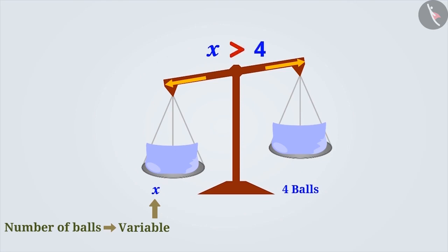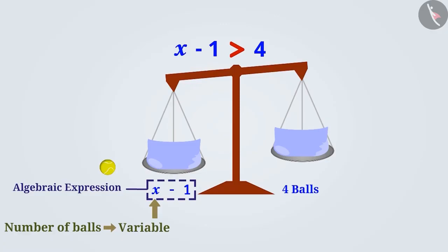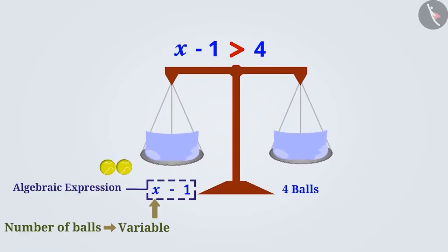What should we do if we have to balance both the scales? Obviously, we need to remove some balls out of the x balls. Here, if we take one ball out of the x balls, the number of balls in the left plate will be x-1. This expression with variables is called an algebraic expression, which we have studied earlier. But still the scales are not balanced. This means x-1 is also a number greater than 4. Now if we take one more ball out, then the total of 2 balls from x balls is reduced. That is, the expression can be represented as x-2 and with that, the scales are also balanced. Therefore, now we can say that the number of balls on either side is equal. x-2 is equal to 4. This is called an equation.